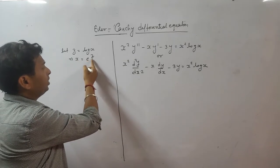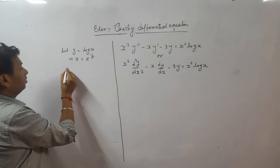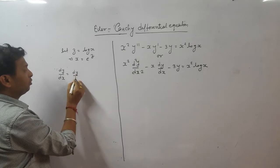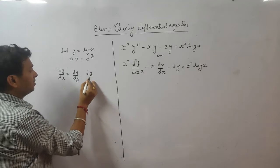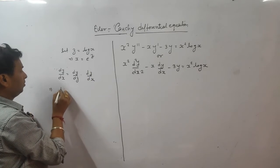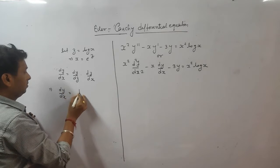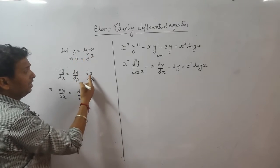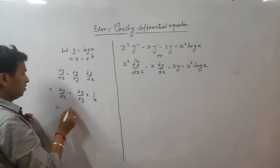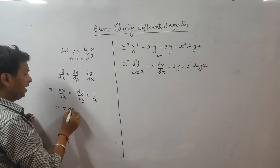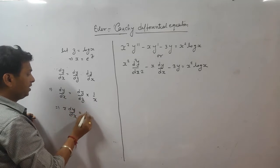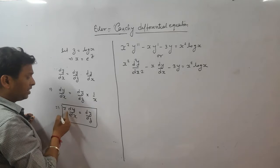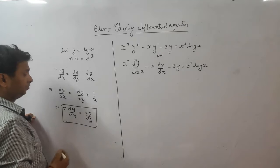When you choose z = log x, then x = e^z. So in place of x we put e^z. Now, what is dy/dx? By the chain rule, dy/dx = (dy/dz)(dz/dx). Since z = log x, dz/dx = 1/x. So x dy/dx = dy/dz. In place of x dy/dx, we put dy/dz.